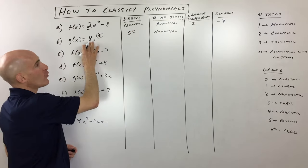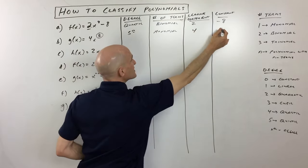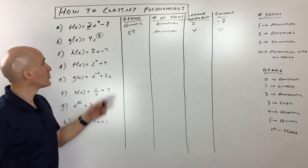The leading coefficient is four. And then the constant term, you can see really there isn't a constant term, or we could say zero. Let's go to the next one.